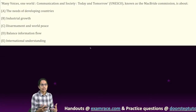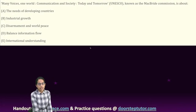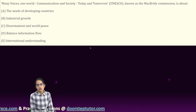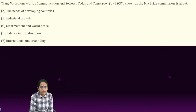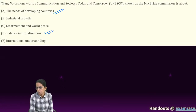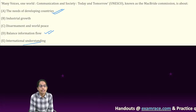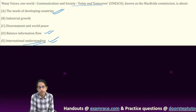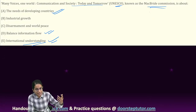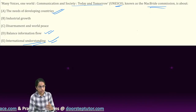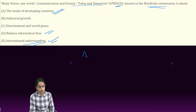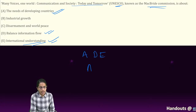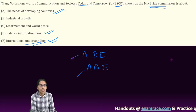From recent happenings, 'Many Voices, One World: Communication and Society Today and Tomorrow' - this is known as the McBride Commission, which focuses on the need for developing countries, balanced information flow, and international understanding. This was a very direct question we had covered in our expected series. The answer choices here are open-ended combinations, so you must be familiar with each concept and theory. A superficial understanding of the concept won't actually help you sail through.